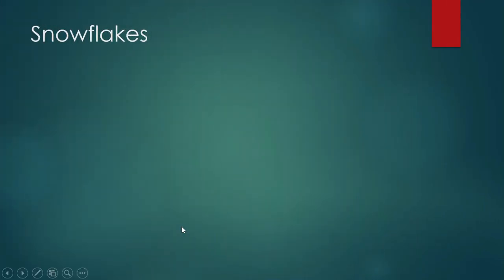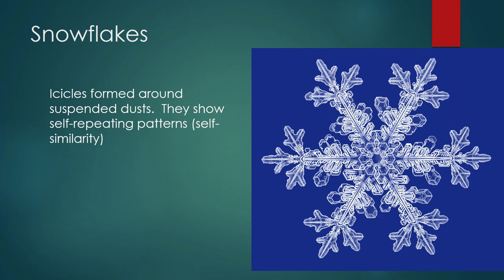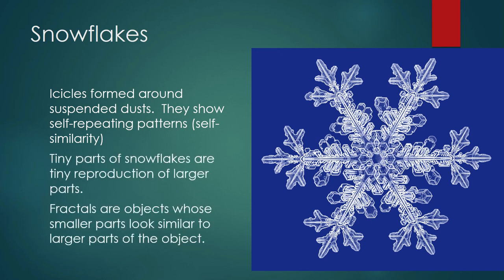Snowflakes. I have not seen a snowflake in my life. These are small ice crystals formed around suspended dust, and they show self-repeating patterns. Snowflakes show what we call fractals — they show self-repeating patterns. When you look at the small parts of a snowflake, those small parts seem to be a tiny reproduction of the bigger parts of the snowflake. Fractals are objects whose smaller parts look similar to the larger parts of the object.